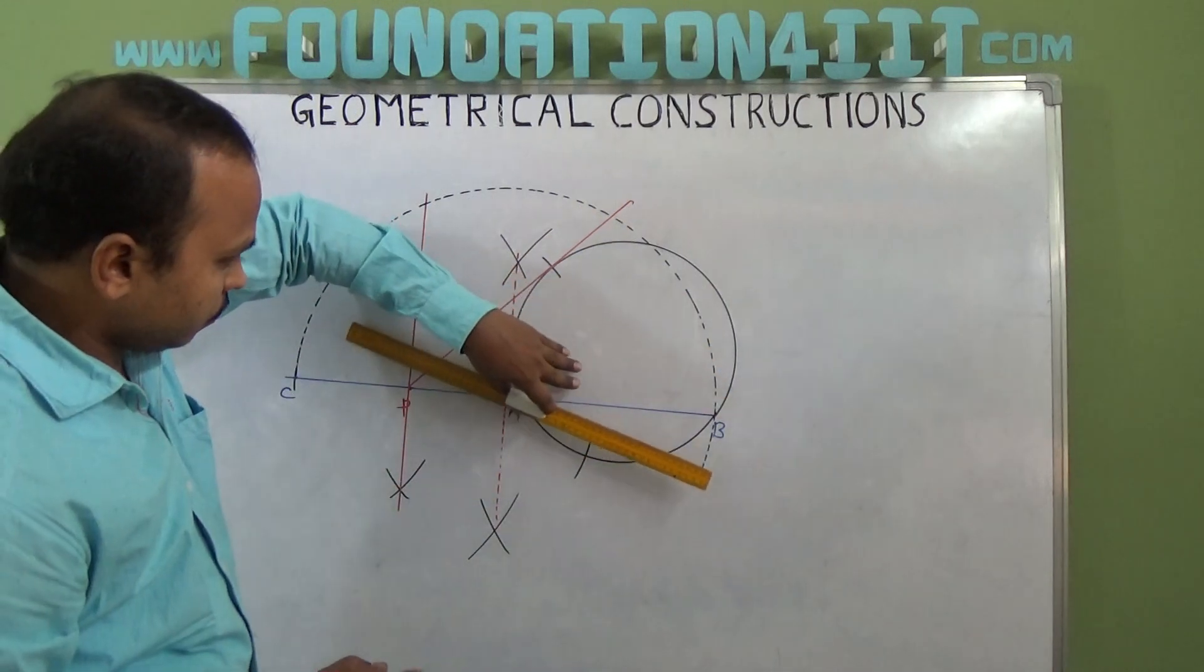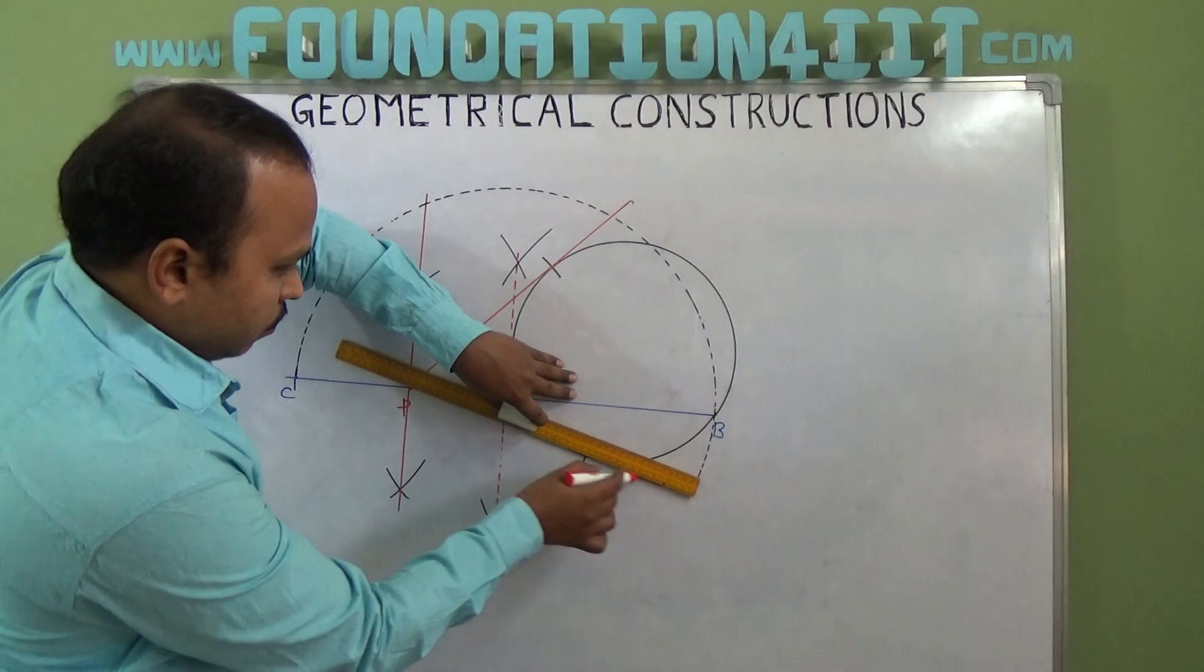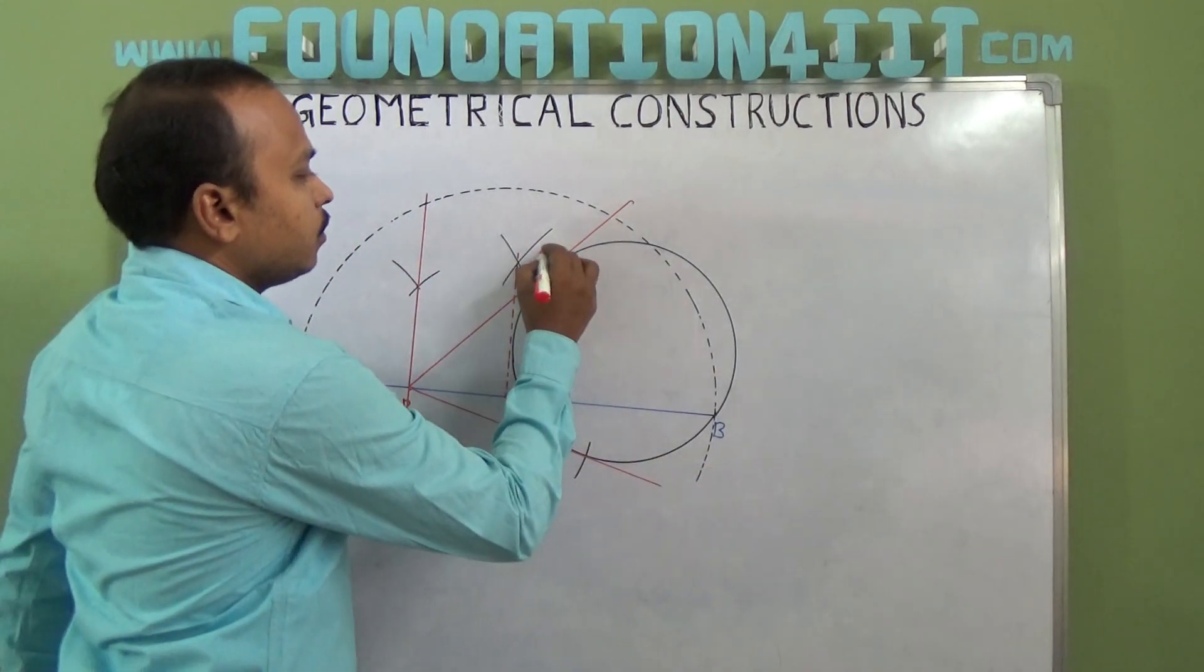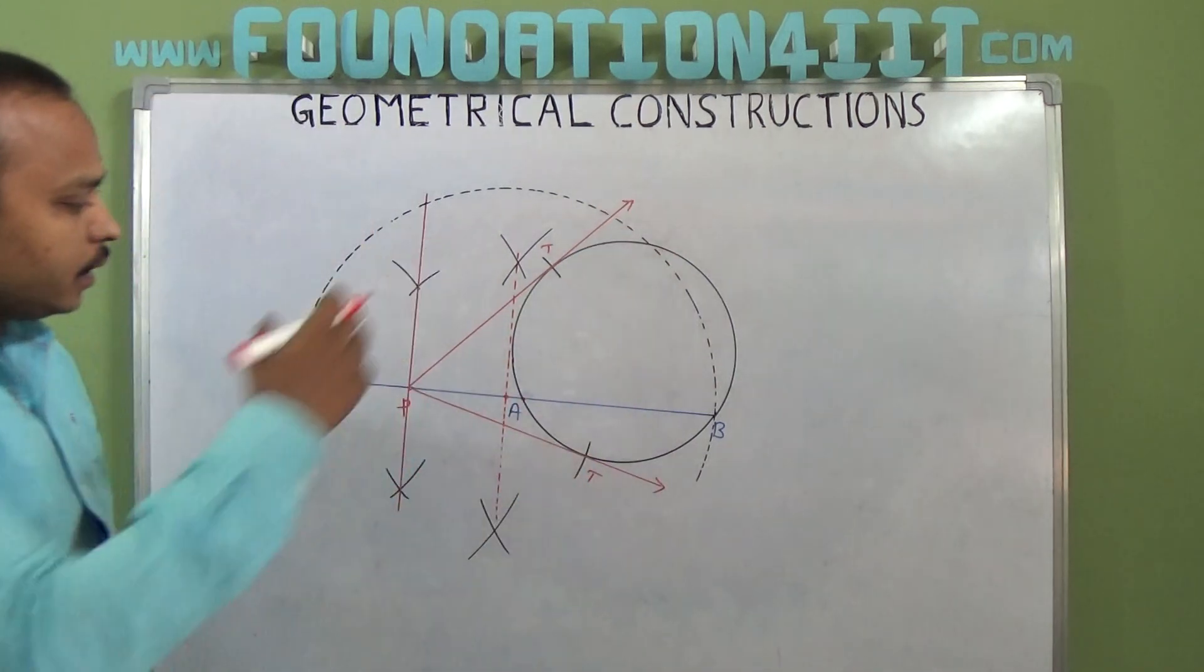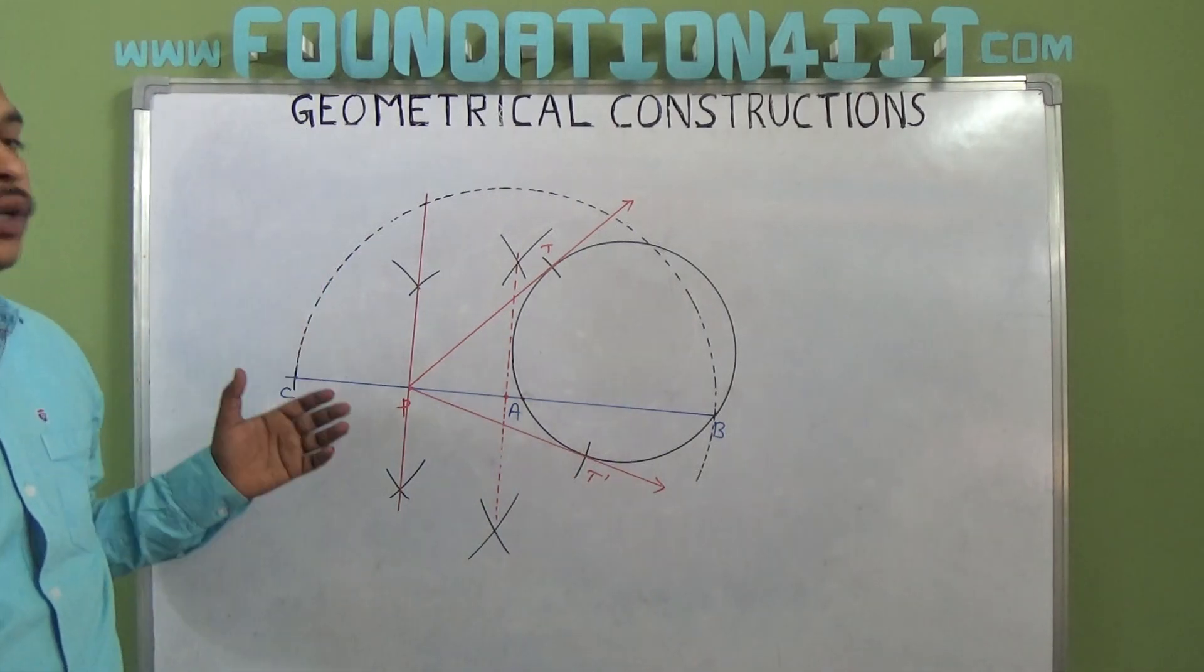And this side also. So this is T and this is T dash. Fine. So PT and PT dash are the two tangents of the circle when center is not known.